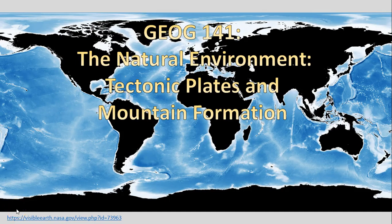In this video we turn to thinking about Earth's surface and why it looks the way it does. We'll begin by talking about tectonic plates and mountain formation. On this opening slide we have a map where land surface topography has been blacked out, showing only ocean topography — what we term bathymetry, essentially the topography beneath the ocean waters.